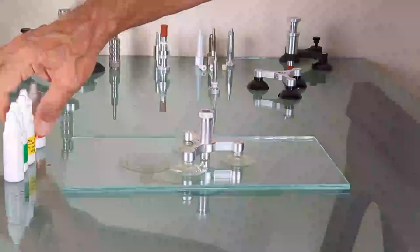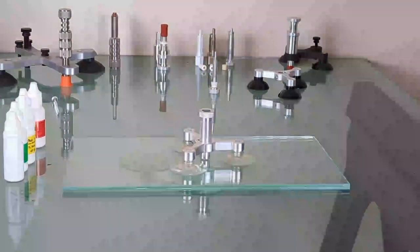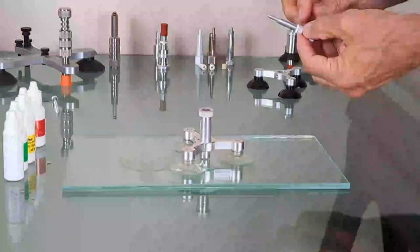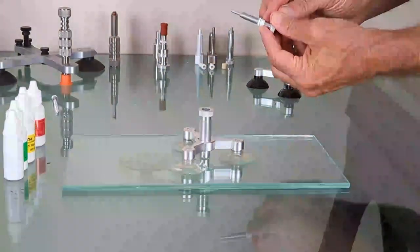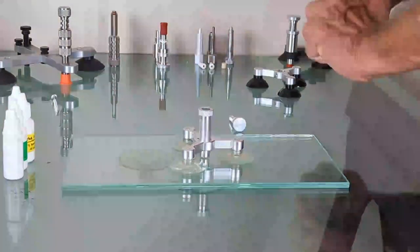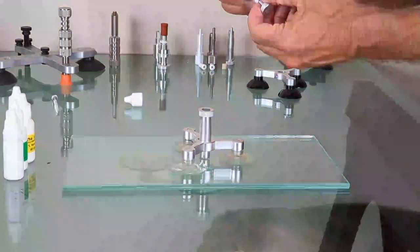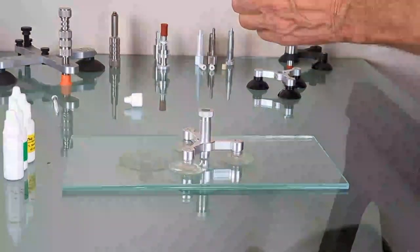Next step we're going to use the easier, faster resin which is the 18, just for the sake of the video. Drop four to five drops down the cylinder and then you want to let that drip down into the grommet on your piston.